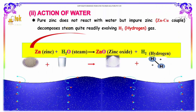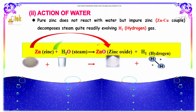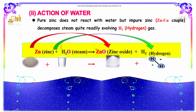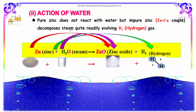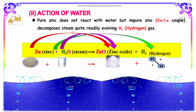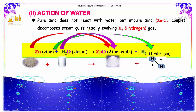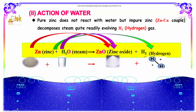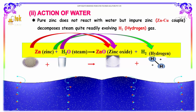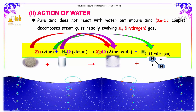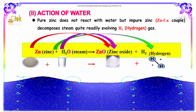Action of water: pure zinc does not react with water, but impure zinc — zinc with a copper couple — decomposes steam quite readily, evolving hydrogen gas. So zinc plus water gives zinc oxide and hydrogen.